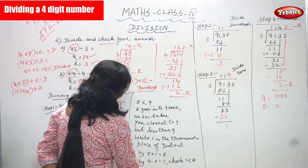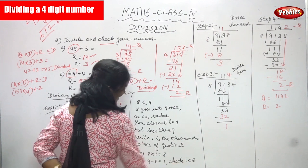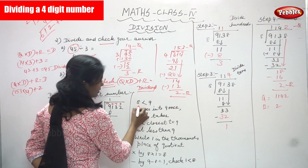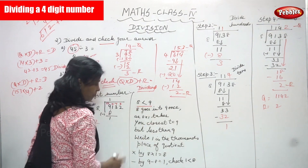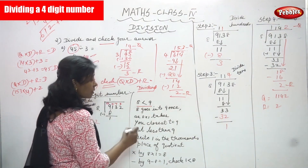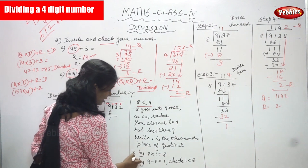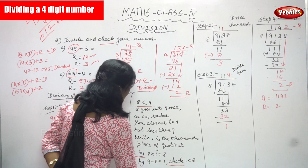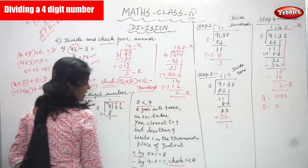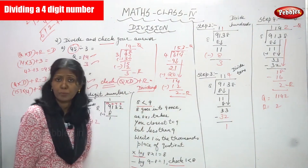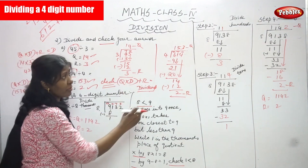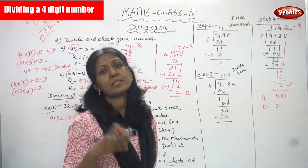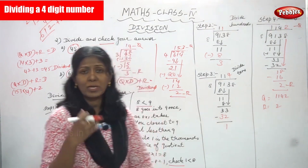Check: 1 is less than 8. These are the steps — compare, multiply, subtract, and check. For each step — step one, step two, step three, step four — you have to follow these same steps every time.